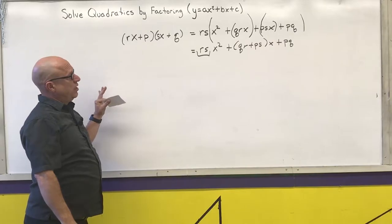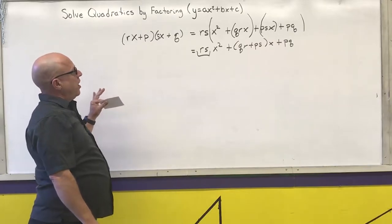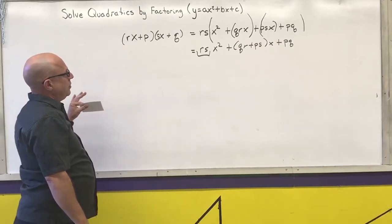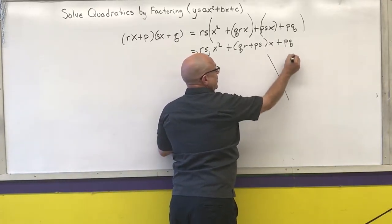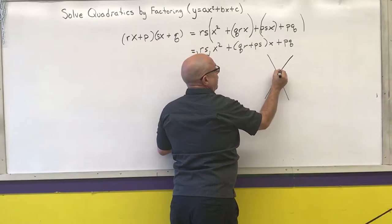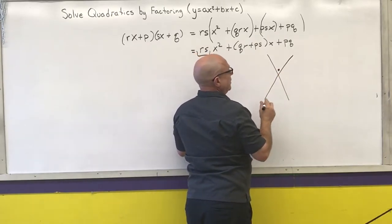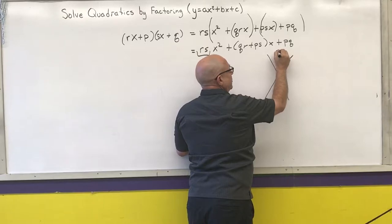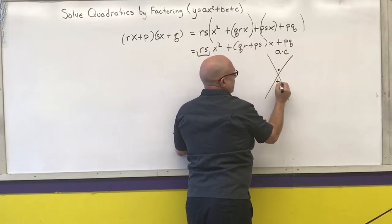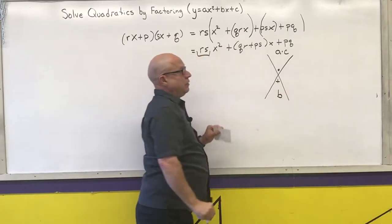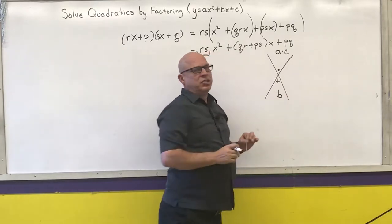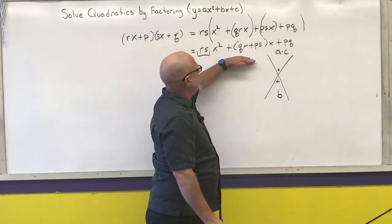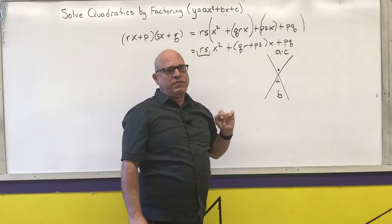I just wanted to show you that's where it came from. When we go to do this method, we use our little diamond for setup. I want two numbers that multiply to a times c and add to the b term. These two numbers are not going to be my overall solution, but they're going to help me go from the trinomial to a form I can factor by grouping.